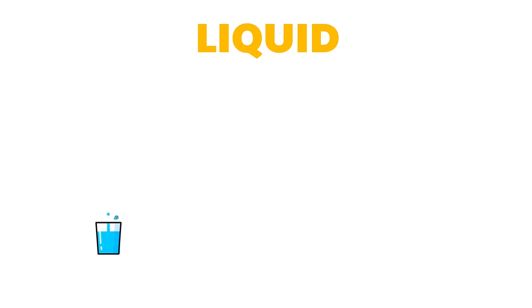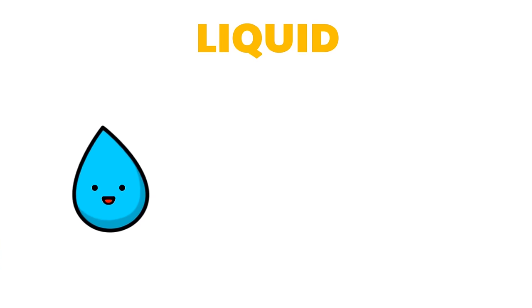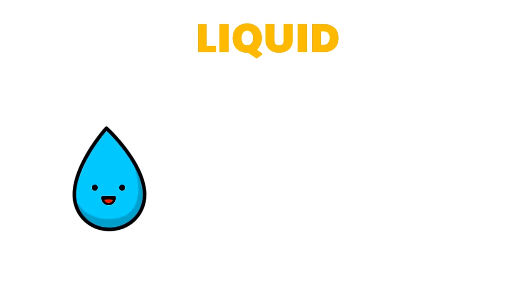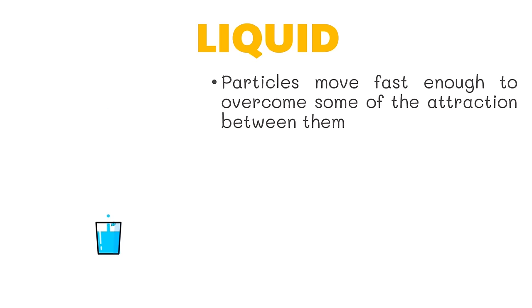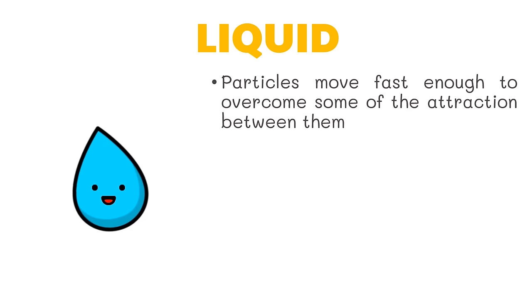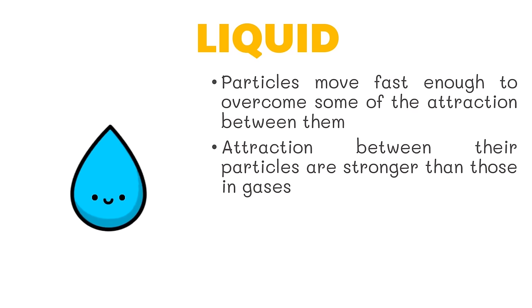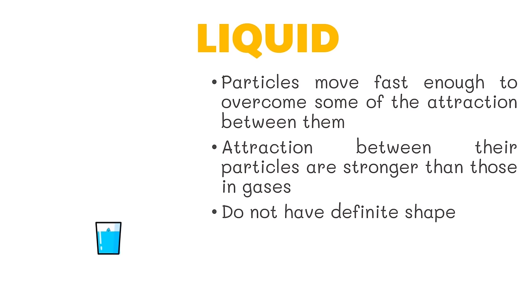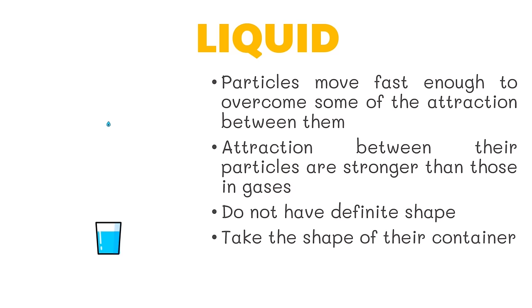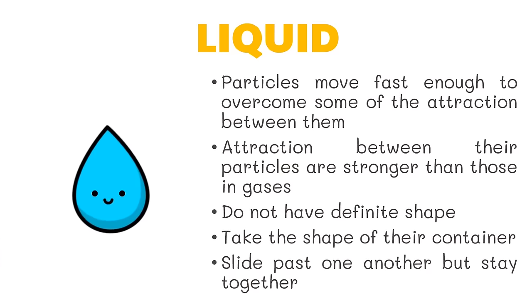The particles of water are closer to one another than gas particles and they are in constant motion. Water in a glass is considered a liquid. Their particles move fast enough to overcome some of the attraction between them. The attraction between their particles is stronger than in gases. Liquids do not have a definite shape — just like gases, they take the shape of their container. The particles slide past one another but stay together.